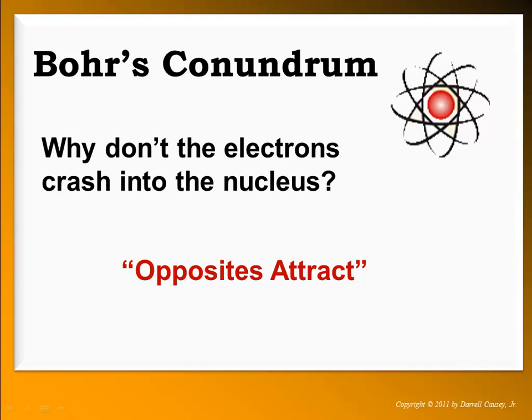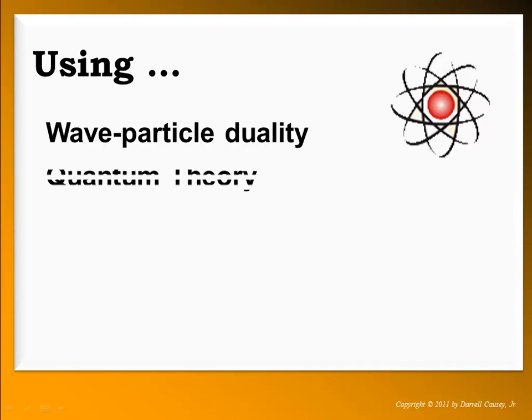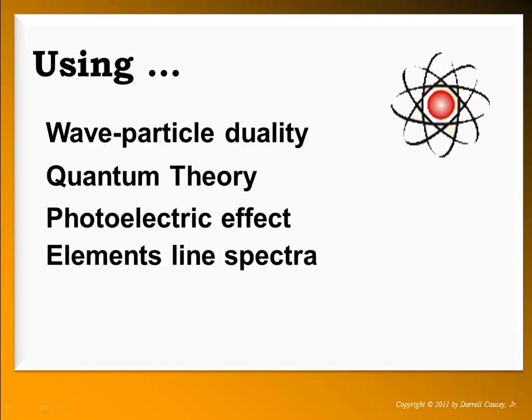Bohr found this very concerning, so he looked at the ideas coming out of the photoelectric effect — basically Albert Einstein's ideas and Max Planck's ideas — and those ideas from the line spectrum. The new ideas behind light were that light was both wave and particle. If light could be particle, with these photons, then possibly the whole reason that we see a line spectrum is the way light is released. Using wave-particle duality, quantum theory, the photoelectric effect, and the elements' line spectra, Bohr put together a new idea.